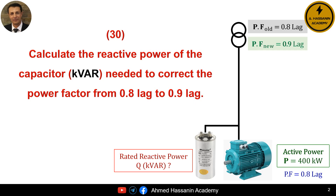In the name of Allah. Question 30: Calculate the reactive power of the capacitor in kilovars needed to correct the power factor from 0.8 lagging to 0.9 lagging.